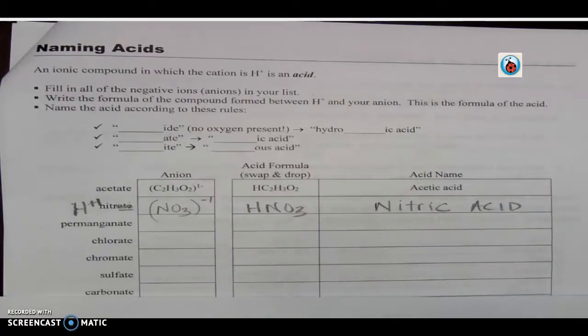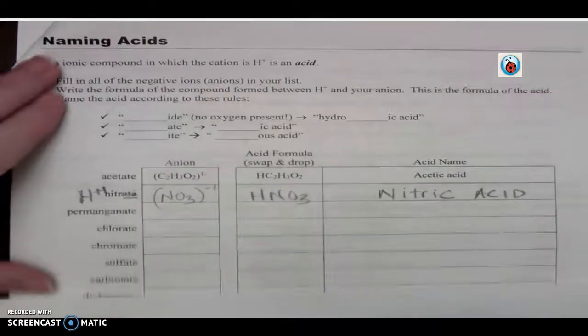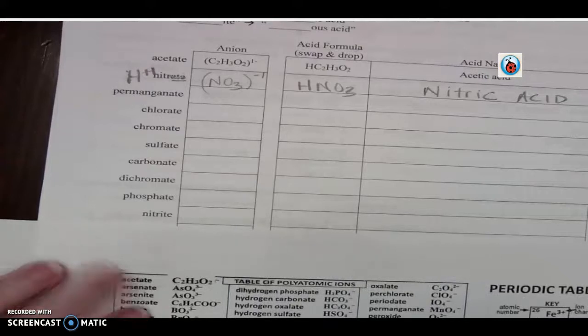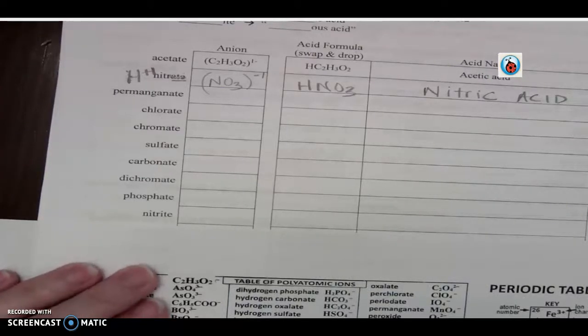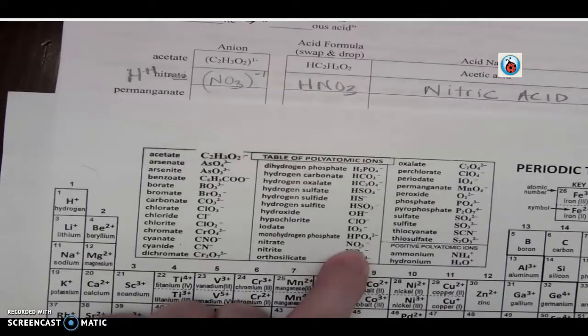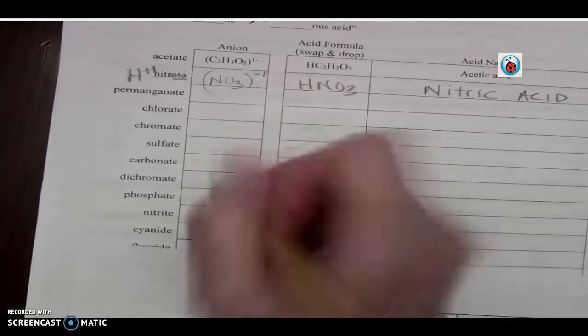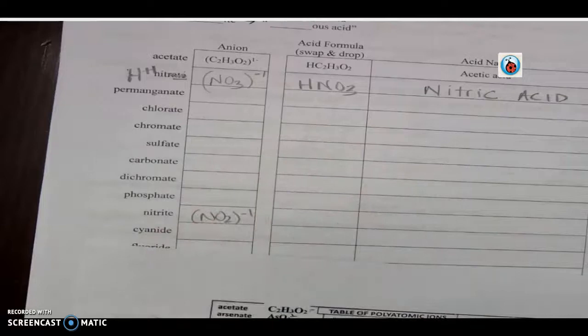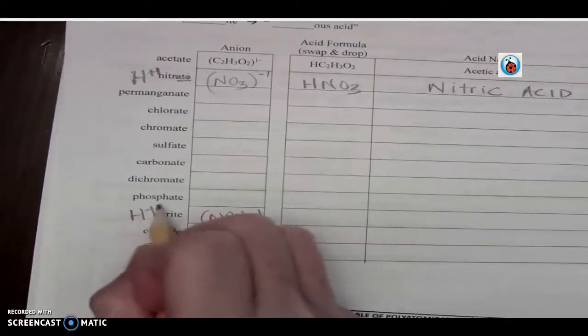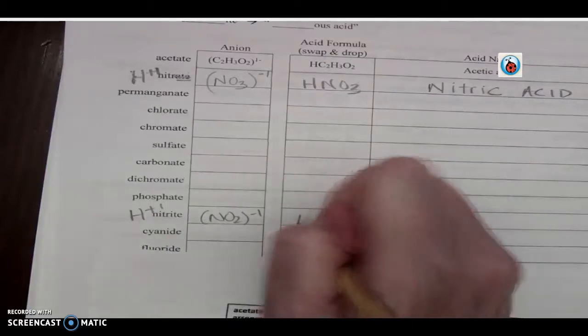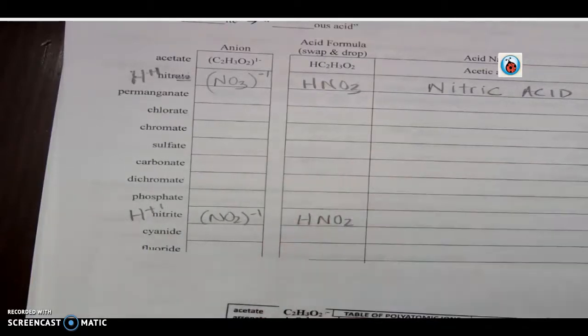You with me on that one? Let's look at a different one - one that's an -ite. Here's nitrite. I'm going to do the same thing. I find nitrite - NO2 minus one. So there's NO2 with a negative one charge. And who's he going to bond with? Again, hydrogen. Swap and drop - plus one, negative one cancels out, so I get HNO2.